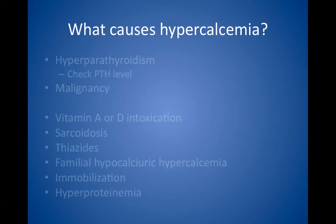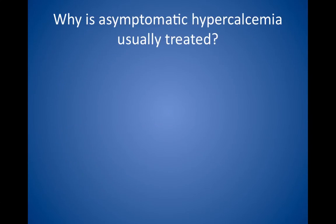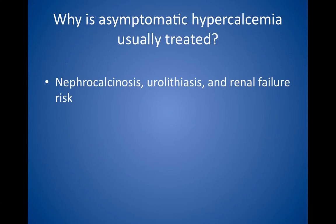What causes hypercalcemia? Hypercalcemia in outpatients is most commonly caused by hyperparathyroidism. In inpatients, the most common cause is malignancy. Check the parathyroid hormone level to differentiate hyperparathyroidism from other causes. Other causes include vitamin A or D intoxication, sarcoidosis, thiazide diuretics, and familial hypocalciuric hypercalcemia — look for a low urinary calcium, which is rare with hypercalcemia. And finally, immobilization. Hyperproteinemia — that is, high albumin — can cause hypercalcemia because of an increase in the protein-bound fraction, but the patient is asymptomatic because the ionized, unbound fraction is unchanged. Prolonged hypercalcemia can cause nephrocalcinosis, urolithiasis, and renal failure because of calcium salt deposits in the kidney, and may result in bone disease secondary to loss of calcium.